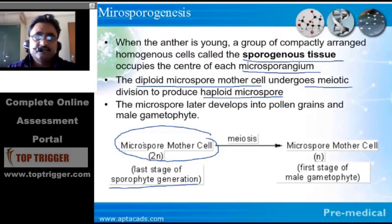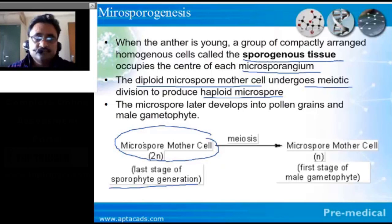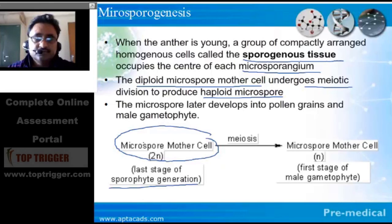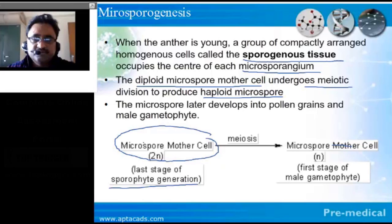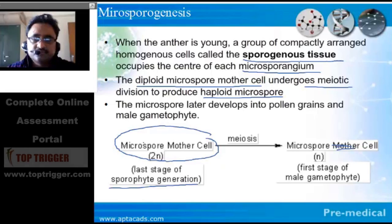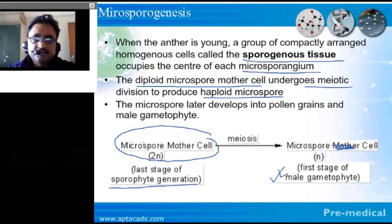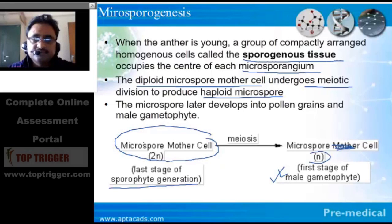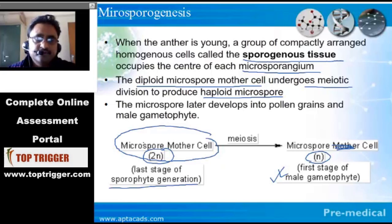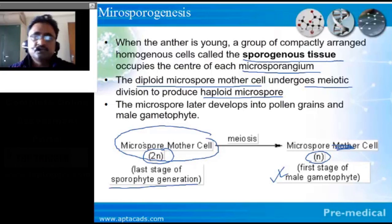As far as the microspore mother cell is concerned, the microspore cell is actually the first stage of the male gametophyte. Why? Because it is a haploid structure, whereas the microspore mother cell is a diploid structure.